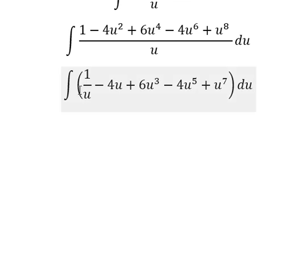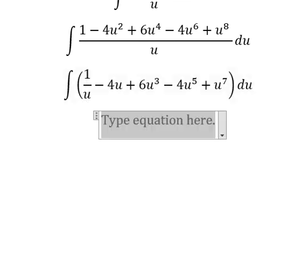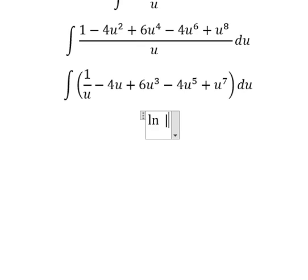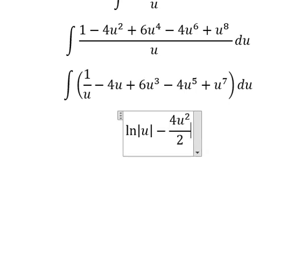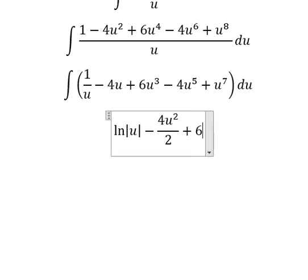The integration of 1 over u gives us ln of the absolute value of u. The integration of 4u gives us 4u squared over 2. Similarly for the remaining terms.